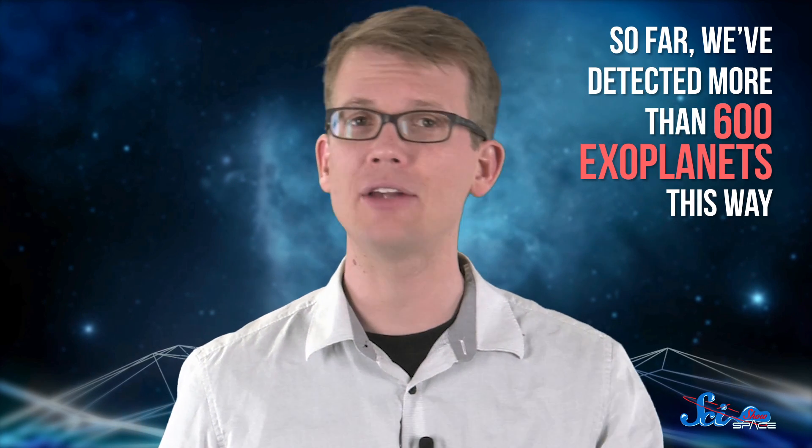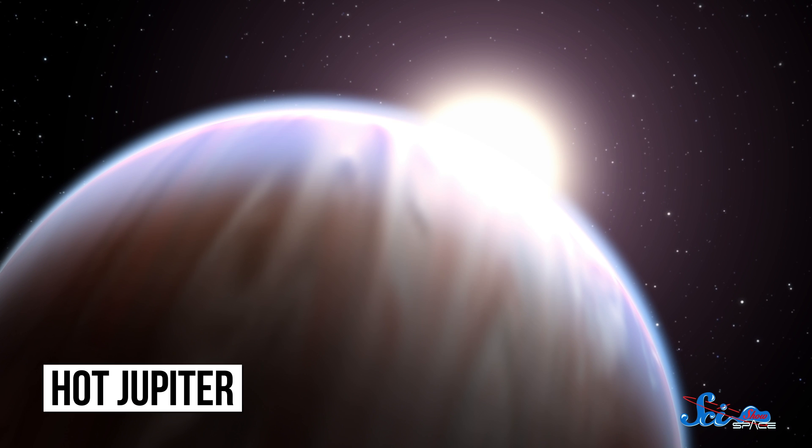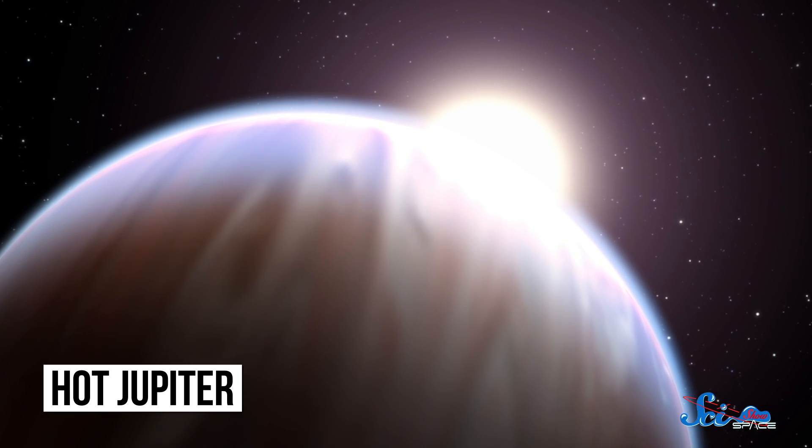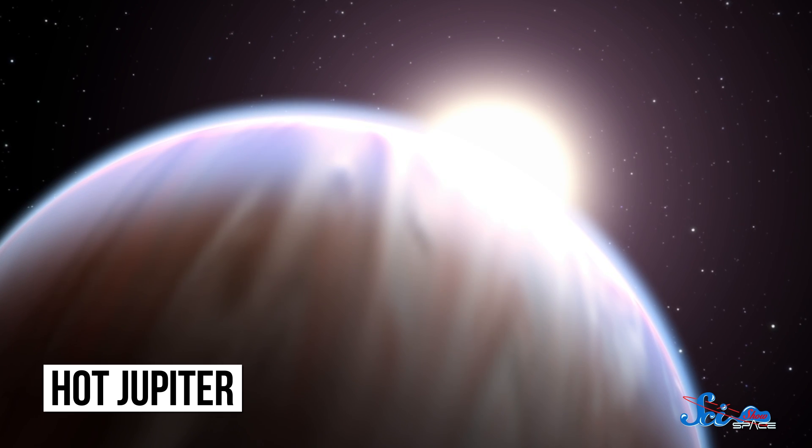So far, we've detected more than 600 exoplanets this way. Problem is, most of the planets we detect using the radial velocity method are hot Jupiters, giant planets orbiting very close to their stars. Since they're so big and orbit so close, they cause bigger, shorter wobbles that are easier for us to detect.